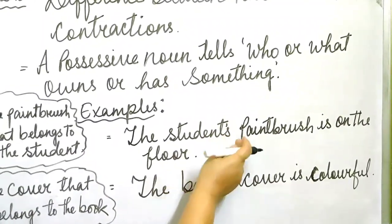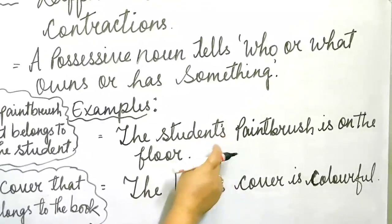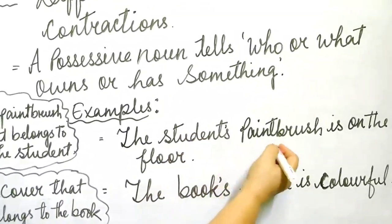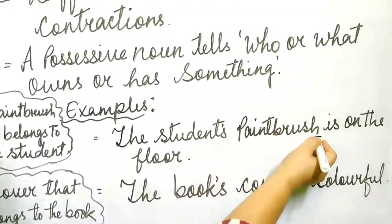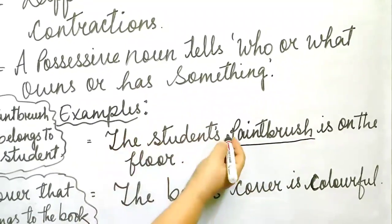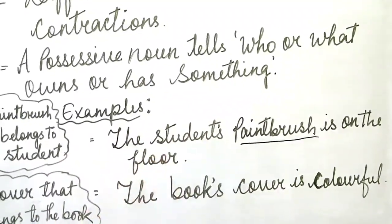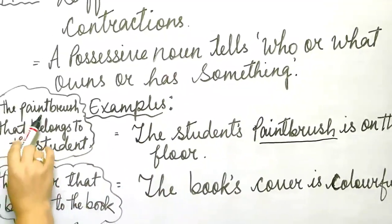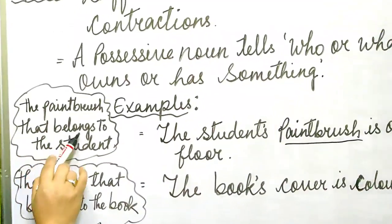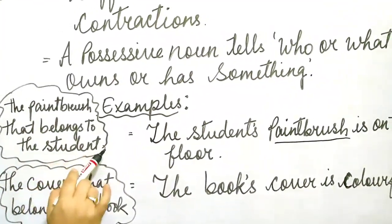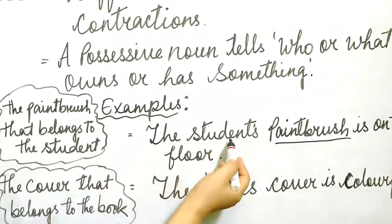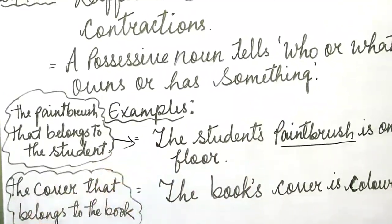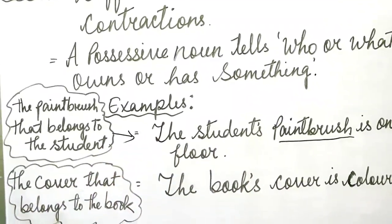The student's paintbrush is on the floor. Whose paintbrush? The student's. I cannot write 'the student paintbrush' — I have to write 'the student's paintbrush.' So I put here apostrophe. The paintbrush belongs to the student.